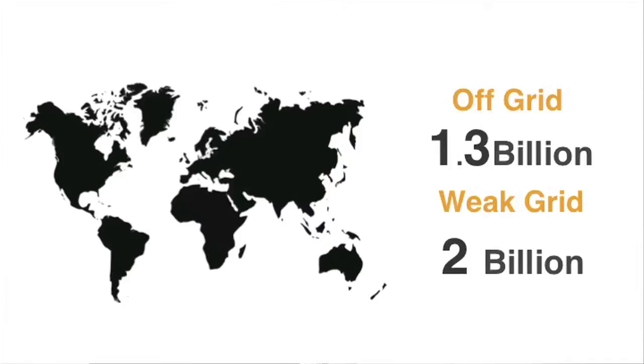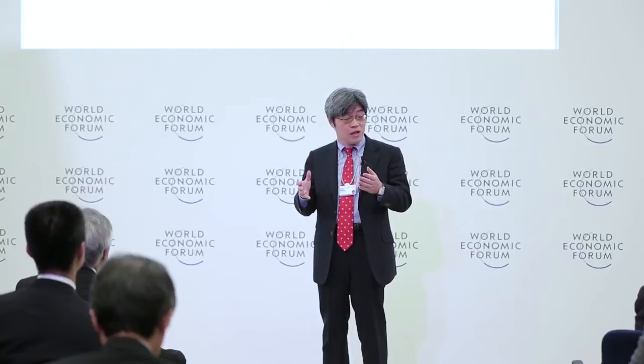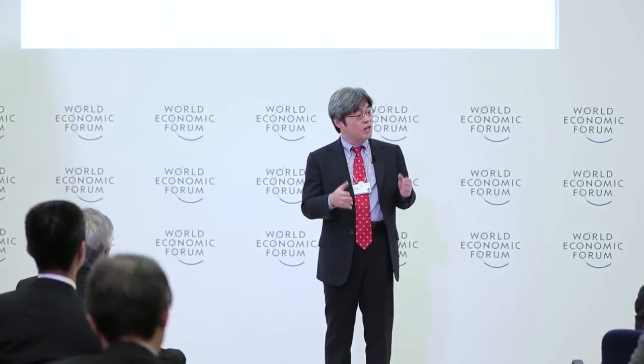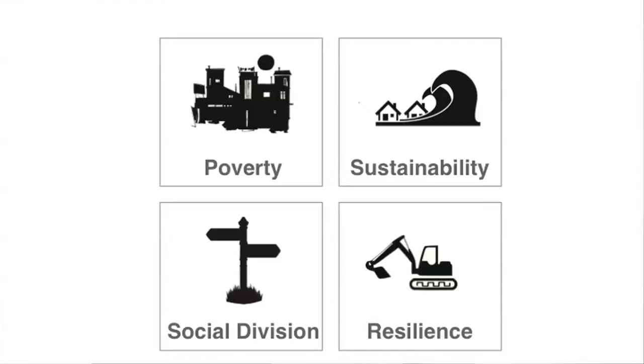We also find many weak grid areas, such as India, where people suffer from power failure and high electricity prices. The lack of electricity leads to serious social problems such as poverty and social divisions, but also raises concerns about environmental sustainability and social resilience.